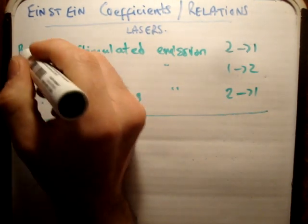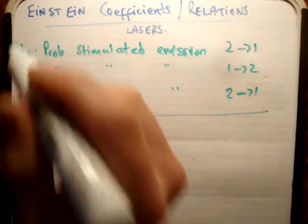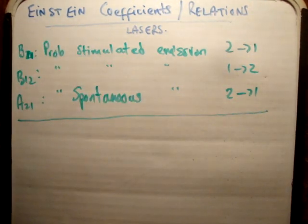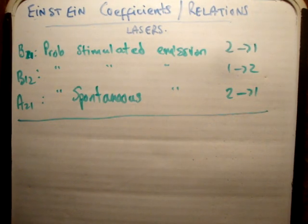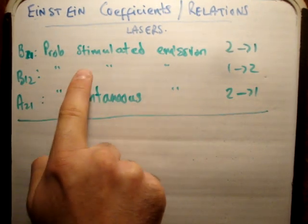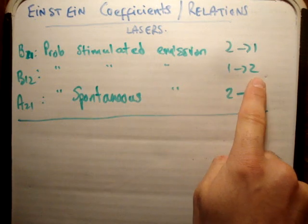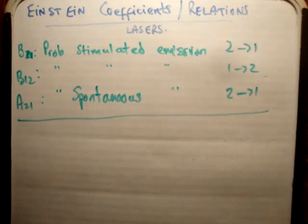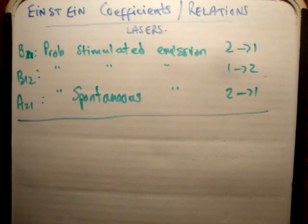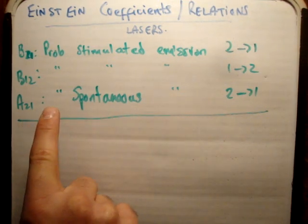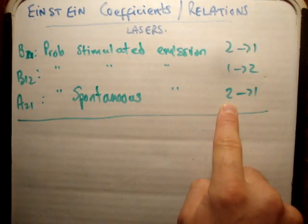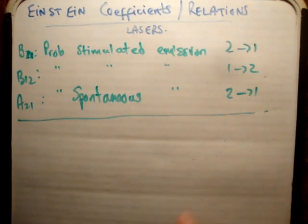B21 is the probability of stimulated emission from level 2 to level 1. B12 is the probability of stimulated emission from level 1 to 2. And A21 is the probability of spontaneous transition or emission from level 2 to level 1. Notice that spontaneous transitions can only happen from an excited state to a lesser excited state, so it must be a downward transition.